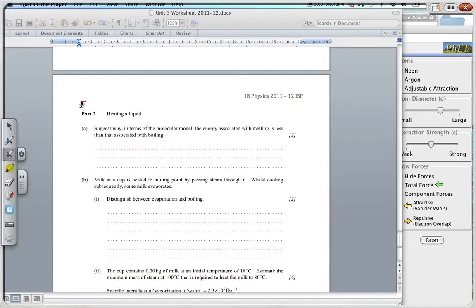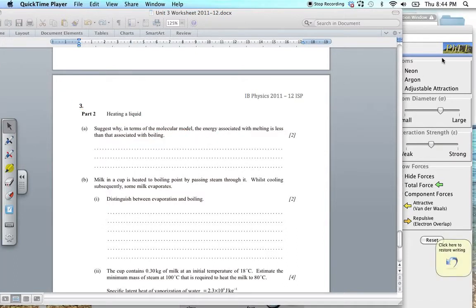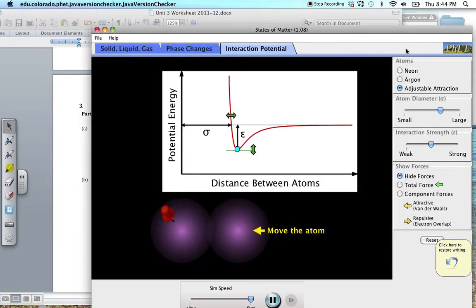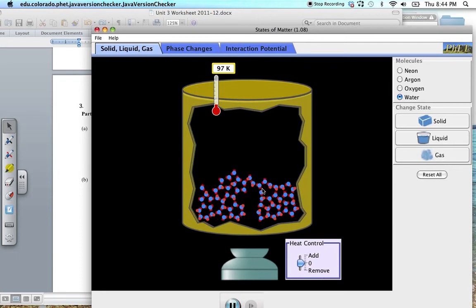So here we are looking at question 3 of the worksheet, section B, and this is looking at heating a liquid. Suggest why, in terms of the molecular model, the energy associated with melting is less than that associated with boiling. For this I want to use some of the applications, simulations, and let's have a look at this situation over here.